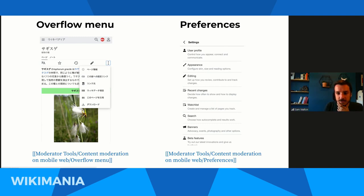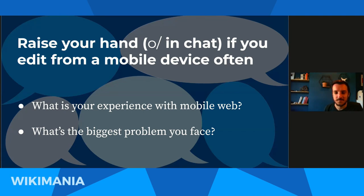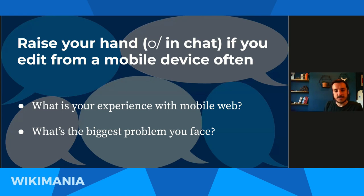I want to open up for maybe a quick ten-minute discussion on mobile web in general. Raise your hand or let us know in chat if you try to use mobile devices to edit on a regular basis — I'd love to hear what your experiences are and what problems you face. There's one question already about whether we include blocking users in scope. Other product teams at the foundation like anti-harassment and trust and safety tools spend more time thinking about blocking users. We did add the block user to that dropdown menu because it was missing, but beyond that we're unlikely to make changes to how users get blocked.